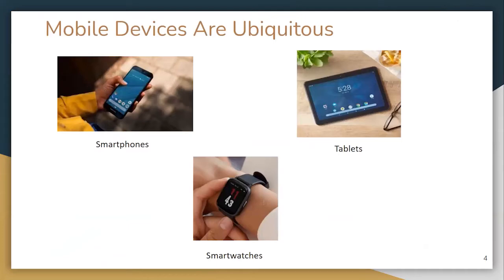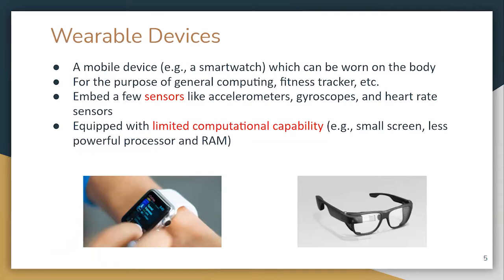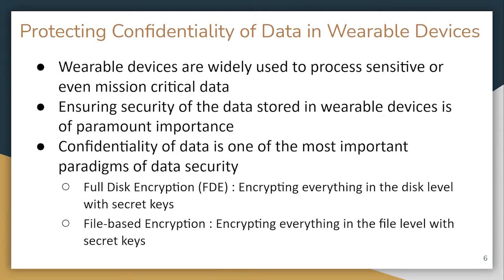Mobile devices are everywhere. We have smartphones, tablets, and smartwatches that we use to share photos, send messages, and manage online banking. Wearable devices such as smartwatches or Google Glass are becoming a dominant category, often used as general computing devices or fitness trackers with sensors like accelerometers, gyroscopes, or heart rate sensors. Compared to other mobile devices, wearable devices often have limited computational capability, yet more and more sensitive data are processed on them.